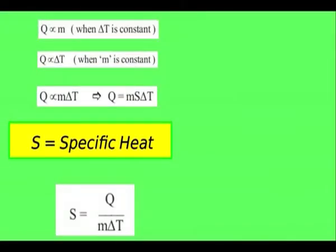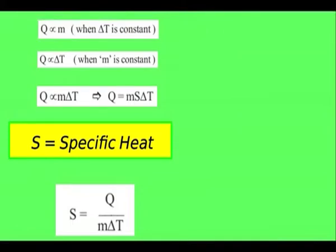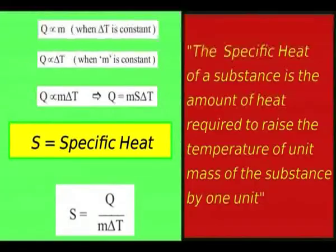So heat is directly proportional to mass: Q ∝ M. And heat is directly proportional to change in temperature: Q ∝ ΔT. Combining these, Q ∝ M·ΔT, which gives Q = M·S·ΔT, where S is the specific heat of the substance. From this, S = Q / (M·ΔT). So the specific heat of a substance is the amount of heat required to raise the temperature of unit mass of the substance by one unit.